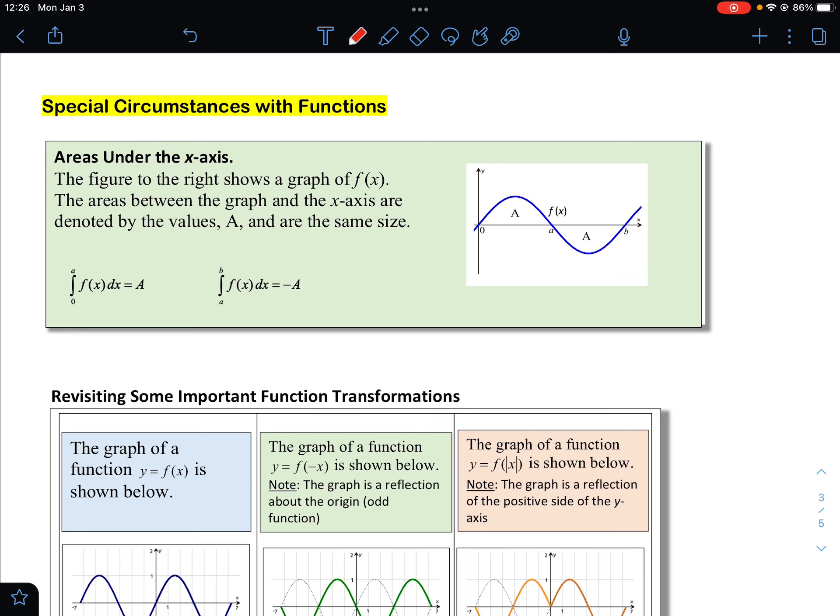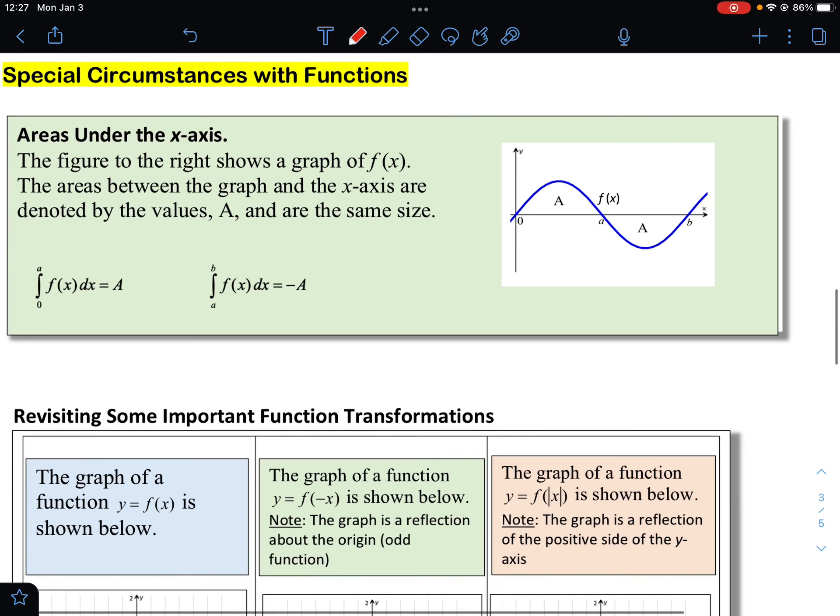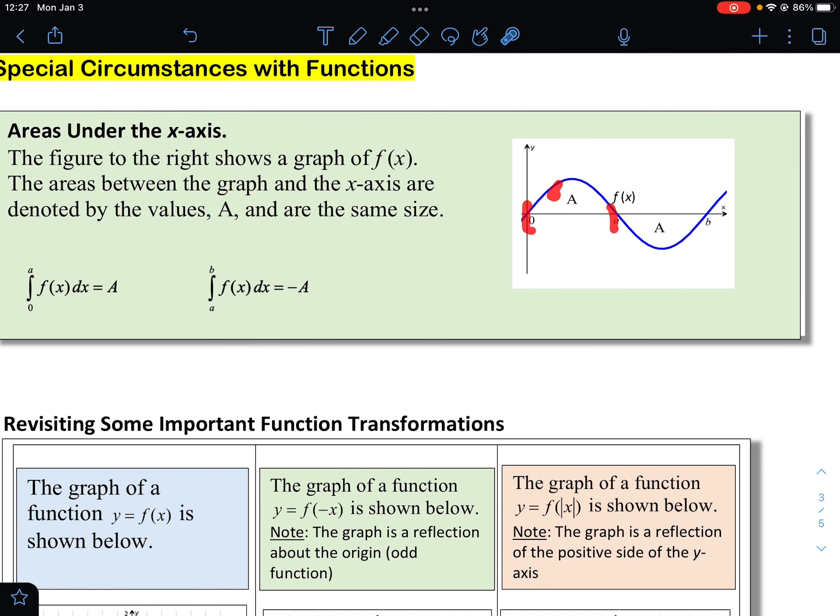All right, the next slide here, we're talking about special circumstances with functions, areas under the x-axis. The figure to the right shows a graph of f. The areas between the graph and the x-axis are labeled with values. However, the integral from 0 to a is above the x-axis, so we say that's positive a, but the integral from a to b is below the x-axis, so we call that negative a. Even though the picture just says a, we know it's below the axis, so it has to be negative.